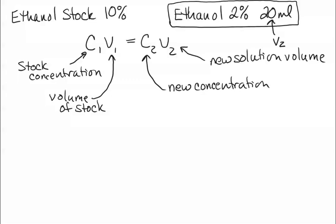We also know the concentration of the new solution that we want to make. That's going to be 2%, so this is our C2. The last piece of the puzzle that we do know is the concentration of our stock, 10%, and that's our C1.